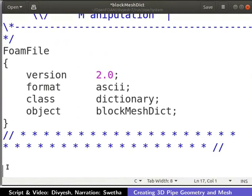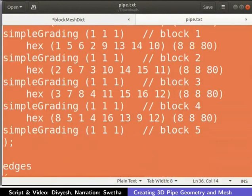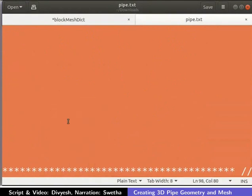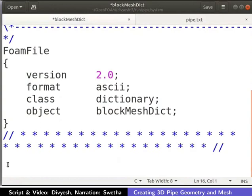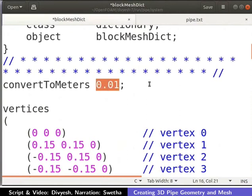Next, open the pipe.txt file that you had downloaded in the text editor. Copy the entire content of the text file. Now switch back to the blockMeshDict file and paste the copied content into the blockMeshDict file as shown. Note that all the dimensions will be in centimeters.